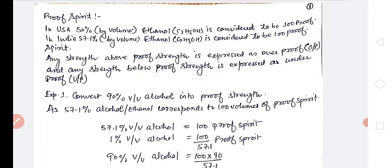Next was percent dilution. In dilution, I told you percent means weight by weight — that is gram in gram — and weight by volume means gram in ml. So percent means, for example, 1 percent means 1 gram in 100 gram of solution, or 1 percent weight by volume means 1 gram in 100 ml of solution.